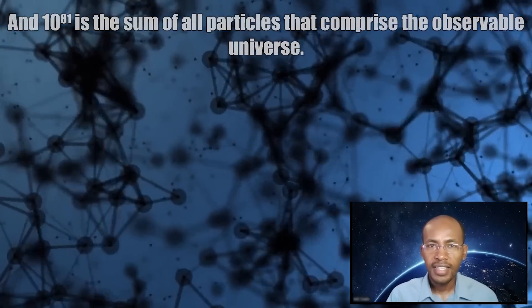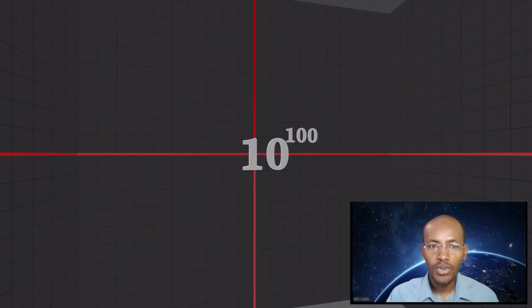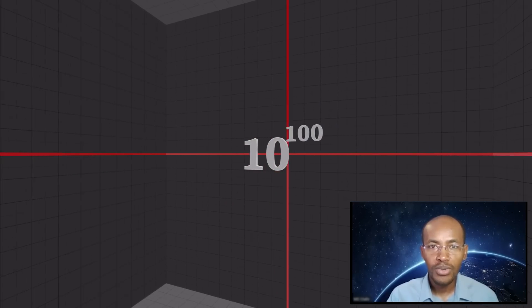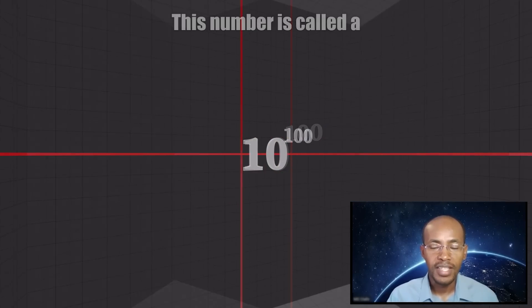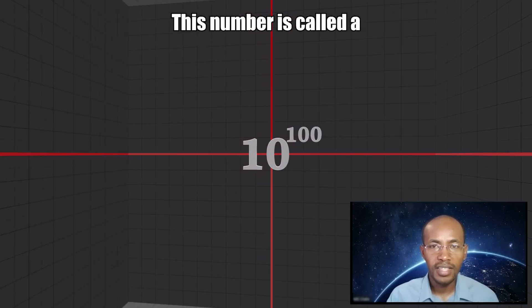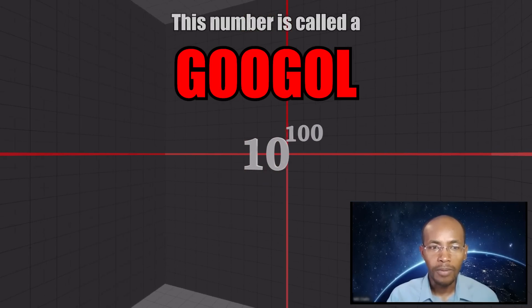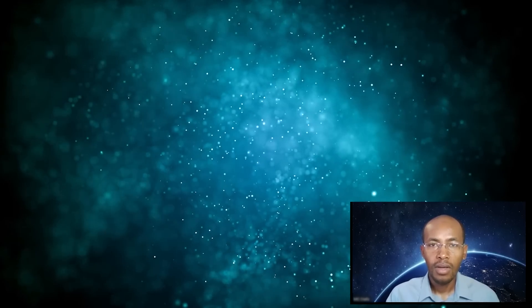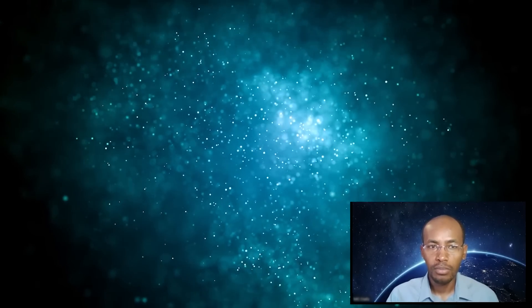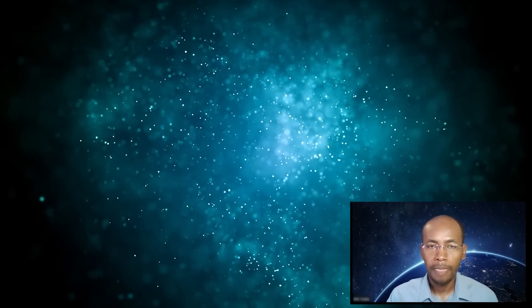Next up is 10 to the 100th power, or 1 plus 100 zeros. This number is also called a googol. This number is 10 to the 19th power larger than the number of all particles in the observable universe.